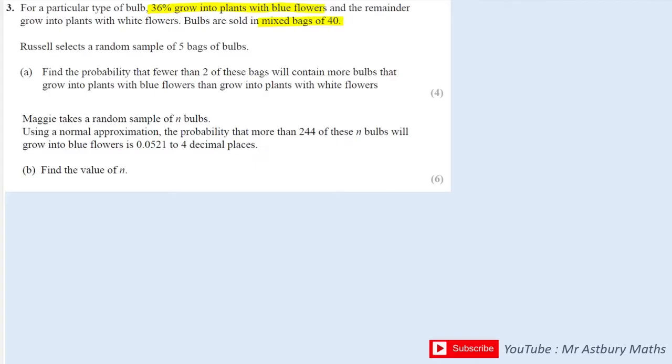What we need to do first is set two distributions. The first one is going to look at how many blue flowers we could get in one bag, so it's binomially distributed because there's only two options: blue or white.